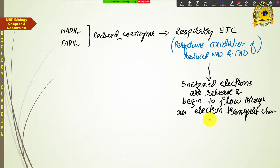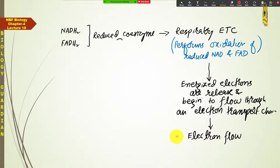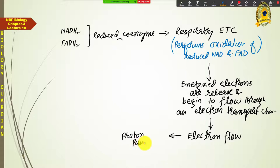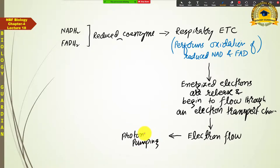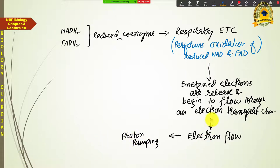When this electron flow is performed, some of the electron carriers begin to perform proton pumping. As you may recall, there were three electron carriers that also performed proton pumping: NADH reductase, cytochrome reductase, and cytochrome oxidase. These three molecules in the respiratory electron transport chain are not only electron carriers but also proton pumps.